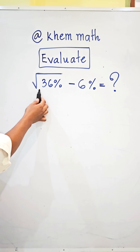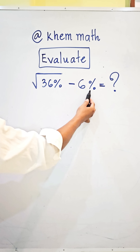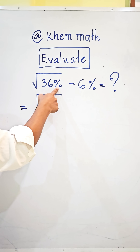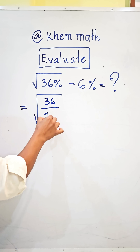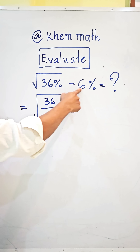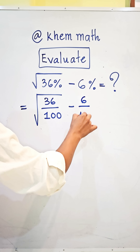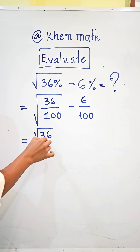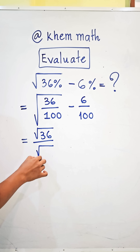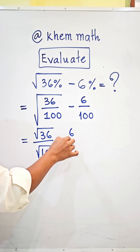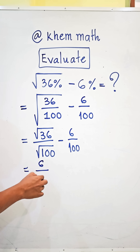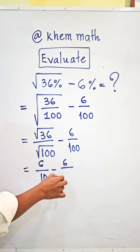Evaluate square root of 36% minus 6%. We write 36% as 36 divided by 100, and 6% as 6 over 100. This gives us square root of 36 divided by square root of 100, minus 6 divided by 100. Since square root of 36 equals 6 and square root of 100 equals 10, we get 6 over 10 minus 6 divided by 100.